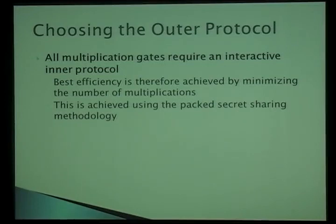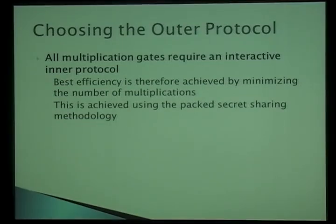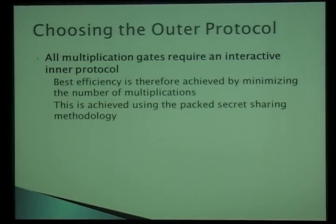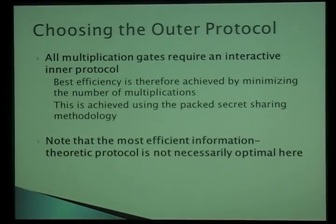In the IPS setting, every multiplication gate in the outer protocol requires an inner protocol — this becomes the most expensive operation. What is trivial in a standard honest-majority setting (a server locally multiplying two values) becomes expensive here. Everything else can be done without distributed protocols and is cheap. This means you get best efficiency by choosing an outer protocol that minimizes the number of multiplications, for example using the packed secret sharing methodology — even if that is not the most natural information-theoretic protocol.